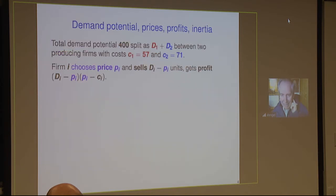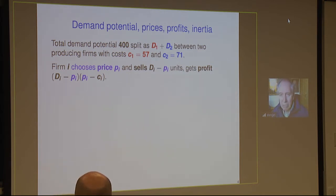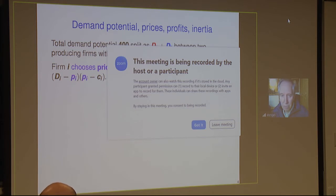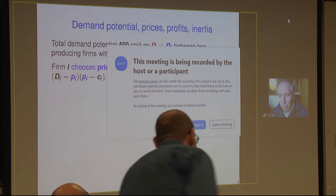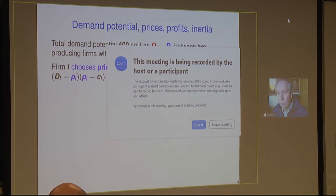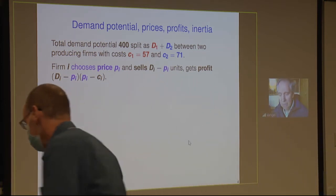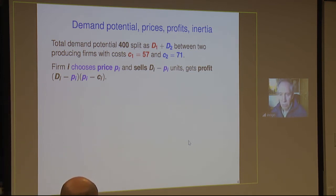Here is the game, with its components described through a concrete example exactly as used by Kayser in her strategic tournament. We have a demand potential — a total of 400 — split into D1 plus D2 assigned to the two firms. Each firm has a production cost, and to avoid a totally symmetric situation, the costs are different: 57 and 71. Each firm chooses a price in each period, and the units sold are the difference between the demand potential and the price.